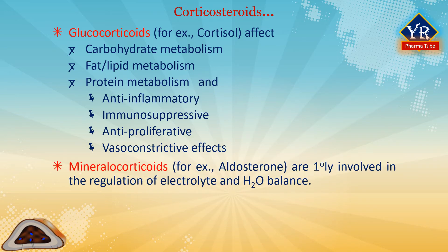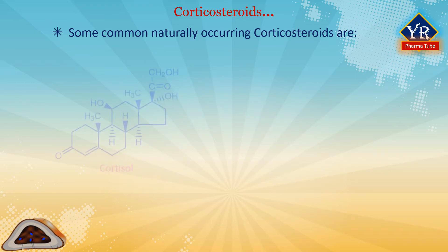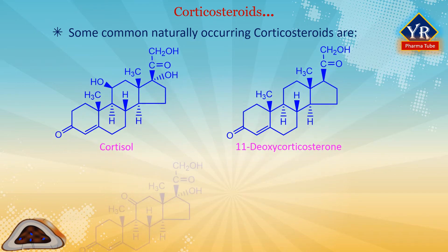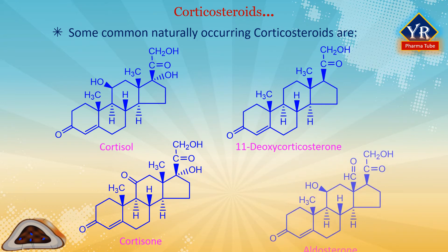Mineralocorticoids such as aldosterone are primarily involved in the regulation of electrolyte and water balance by modulating ion transport in the epithelial cells of the renal tubules of the kidney. Some common naturally occurring corticosteroids are cortisol, corticosterone, cortisone, and aldosterone. Note that cortisone and aldosterone are isomeric to each other. The main corticosteroids produced by the adrenal cortex are cortisol and aldosterone. All these corticosteroids are pregnane derivatives.